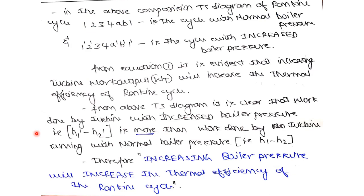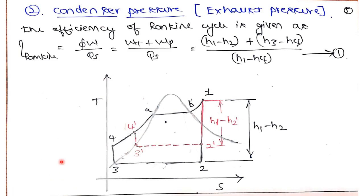That is one parameter. Next we will go for condenser pressure — the second parameter. We have seen that increasing boiler pressure increases thermal efficiency. Let us now analyze the effect of condenser pressure. Write down the same efficiency expression to understand the dependency of efficiency on this parameter.